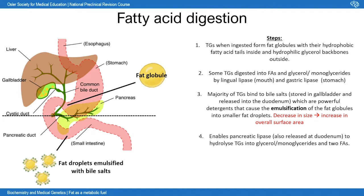By the time the contents reach the ileum — the final part of the small intestines — the majority of lipids are digested. Most digestion comes from pancreatic lipase, released by the pancreas through the cystic duct into the duodenum. Pancreatic lipases cleave the ester linkage, separating the triglyceride into glycerol and monoglycerides — a glycerol molecule with one fatty acid — or completely into glycerol and three free fatty acids.